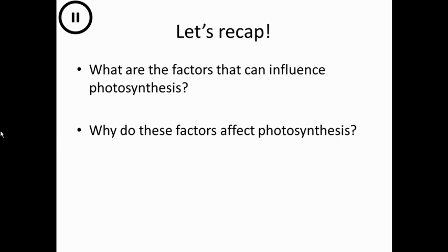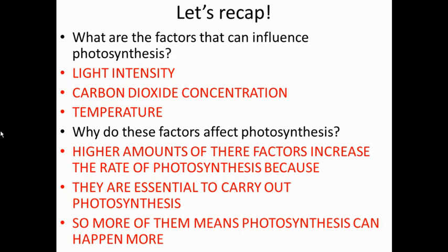So what are the three factors we've just talked about, and why do these factors affect the photosynthesis rate? Why do they influence it? Have a think about that and pause the slide now. The factors that can influence photosynthesis are light intensity, carbon dioxide concentration, and temperature. The higher the amounts of these factors, the greater the rate of photosynthesis, because they're essential to carry out photosynthesis. More of them means photosynthesis can happen more — the more reactants there are, the more photosynthesis can happen.